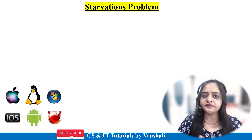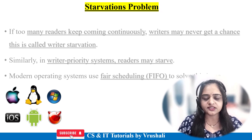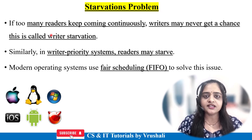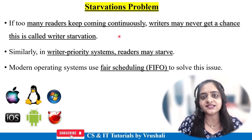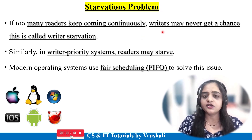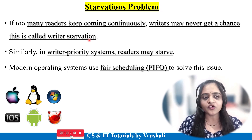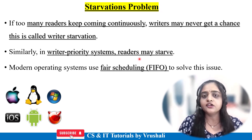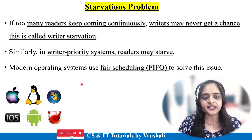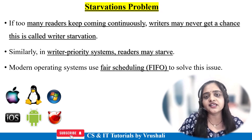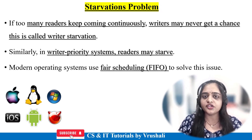There is also the concept of starvation in operating systems. Sometimes many readers continuously arrive and access the database, so the writer never gets a chance — this is called writer starvation. Conversely, if writers have priority and continuously update data, readers never get a chance to read — this is reader starvation. To solve the starvation problem, modern operating systems use a First-In-First-Out (FIFO) scheduling algorithm: whichever process arrives first gets executed first. This is the best solution for starvation.